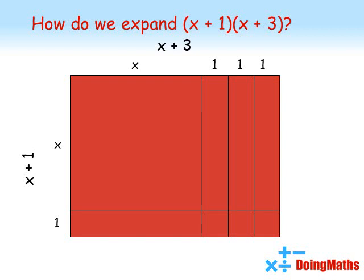Let's split the rectangle up into separate parts. You can see at the top we've split X plus 3 into X and 3 ones, and on the side we have split X plus 1 into X and 1, giving us a collection of squares and rectangles. We're now going to find the areas of these separate squares and rectangles which we can then bring together to give us the full area.